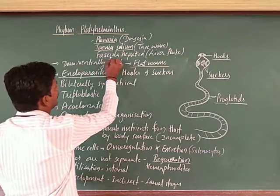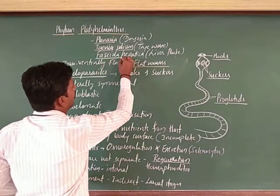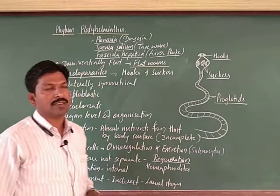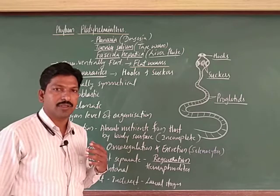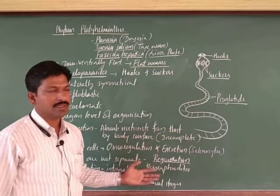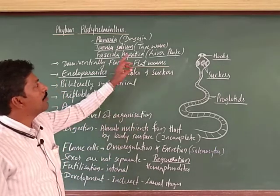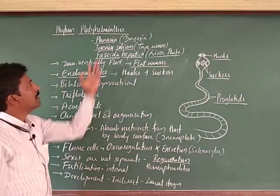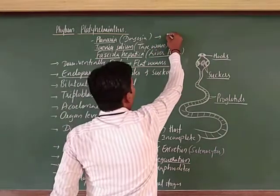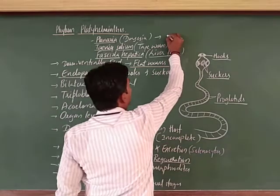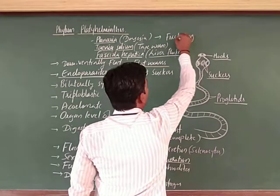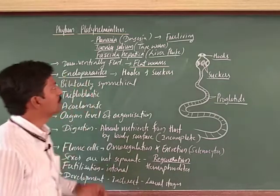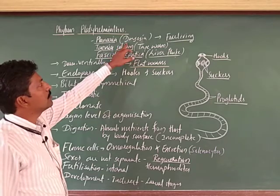Another example is Fasciola hepatica — the scientific name of the liver fluke — which is found in the liver of sheep. It is also an endoparasite. Taenia is found in the intestine as an intestinal flatworm, while Fasciola hepatica — hepatica meaning related to the liver — causes disease in sheep. Planaria is free-living, found in moist soil or aquatic environments.